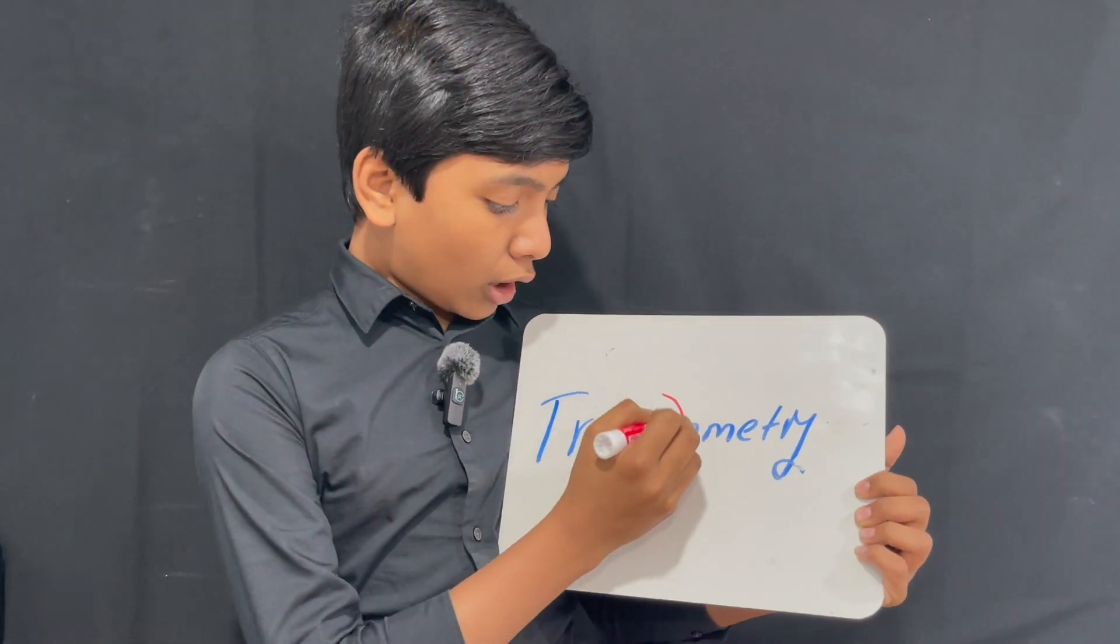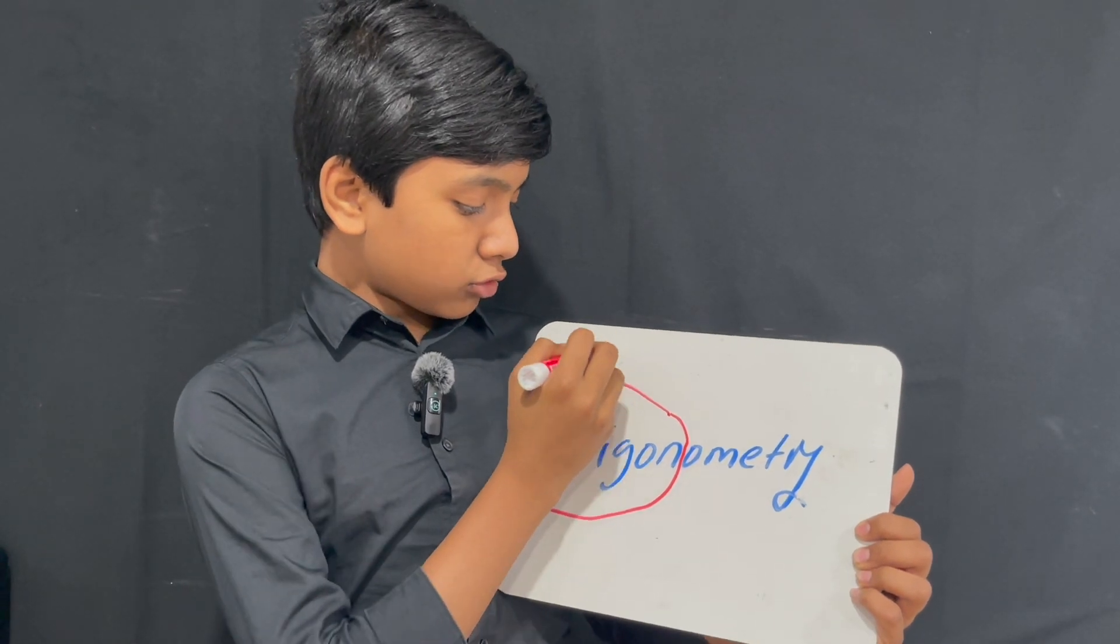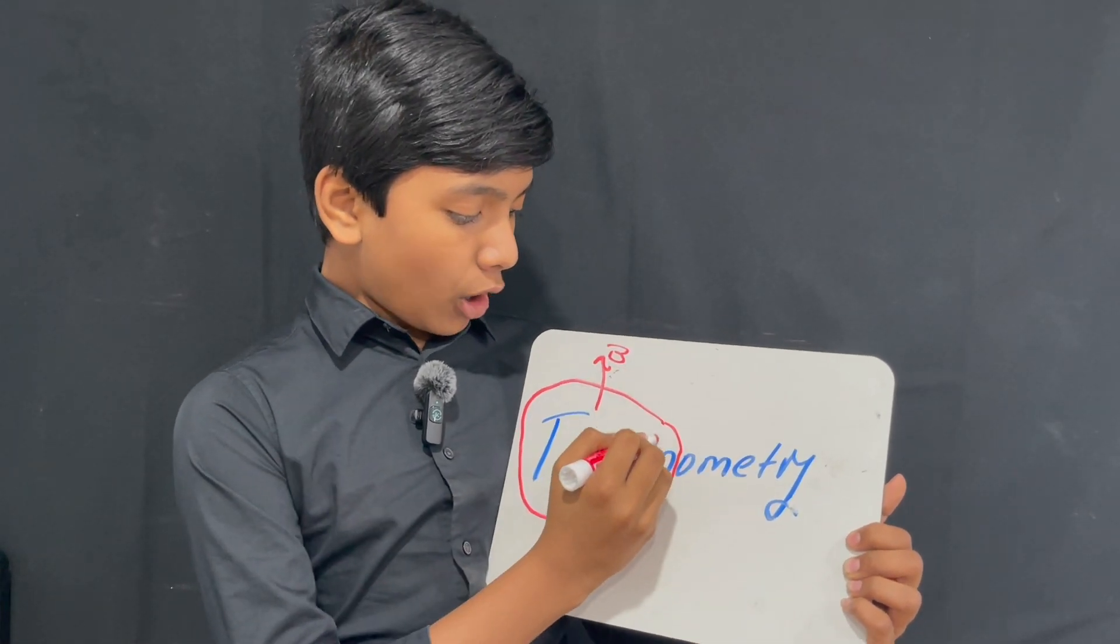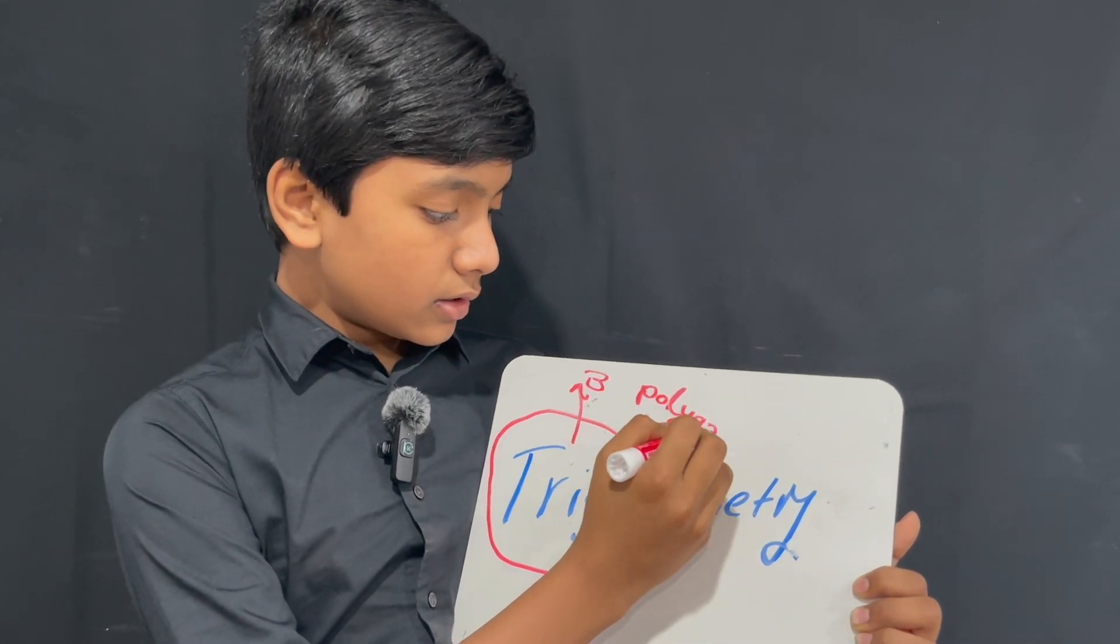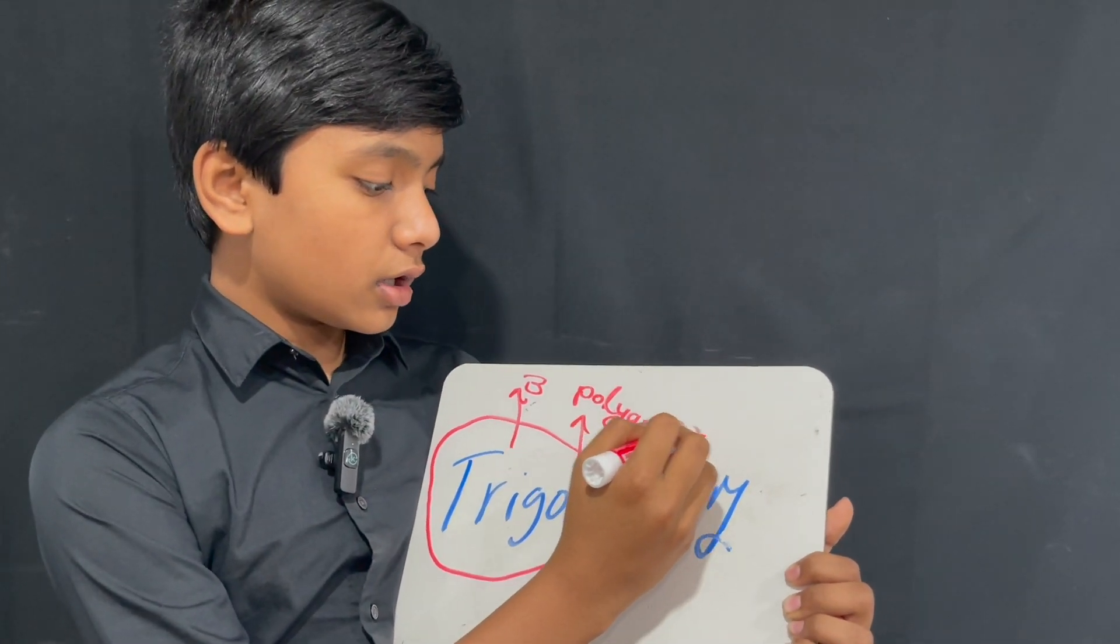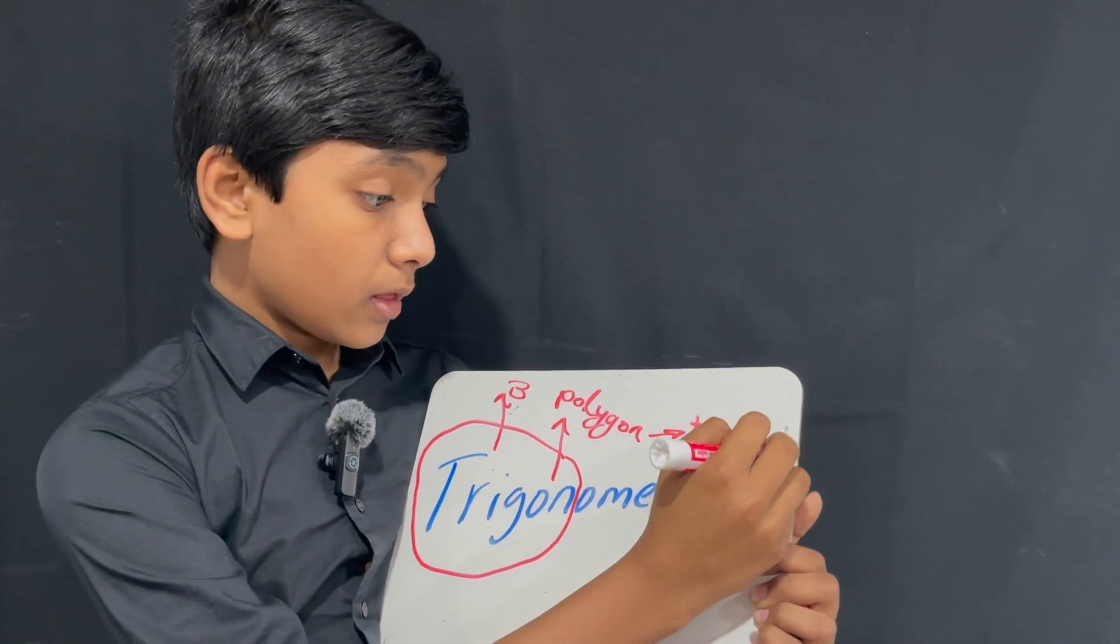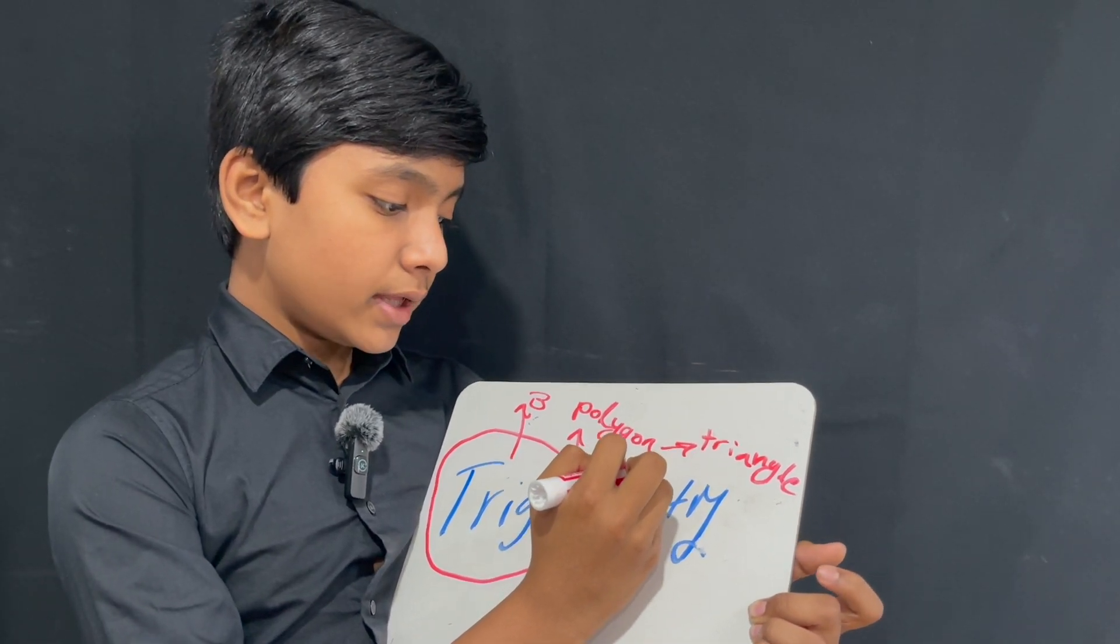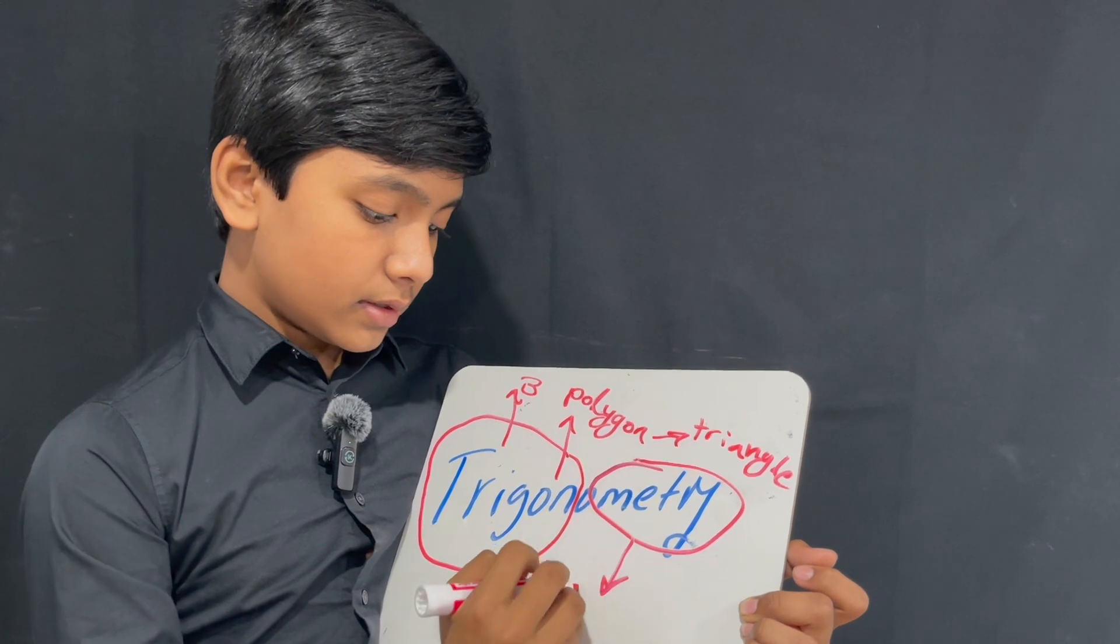Trigon stands for three-sided polygon, in other words a triangle, and metri is to measure.